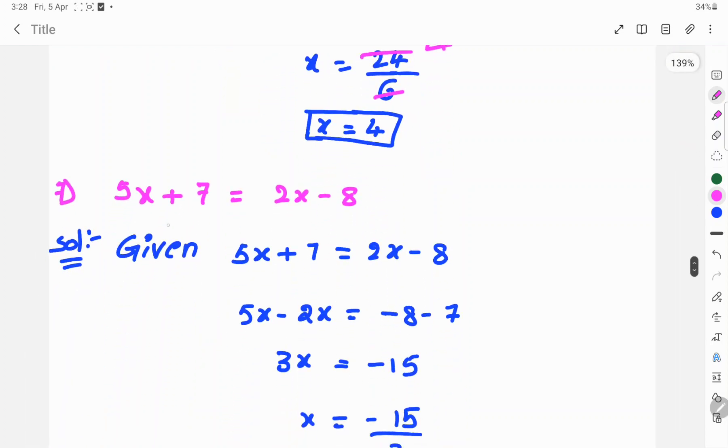And then second one: 5x plus 7 is equal to 2x minus 8. Given that 5x plus 7 equals 2x minus 8, we move the positive 2x to the left hand side, then minus 2x equals minus 8 minus 7.